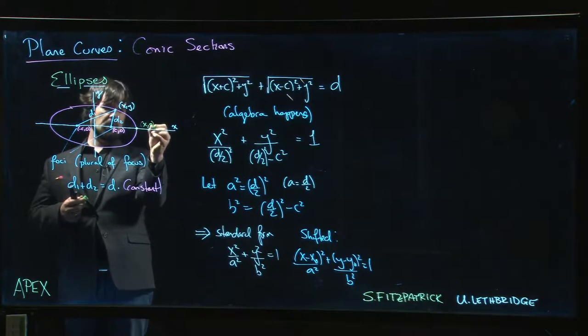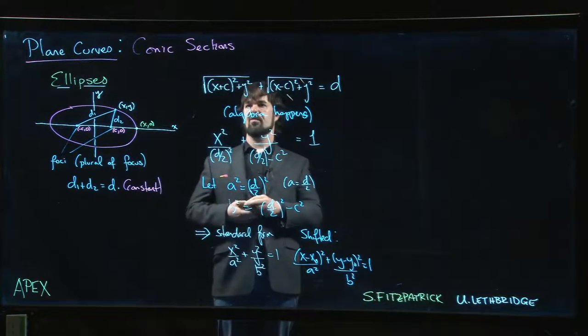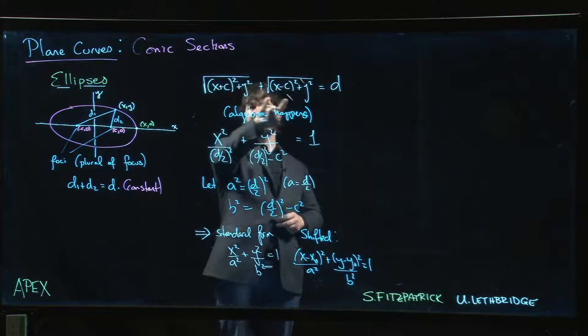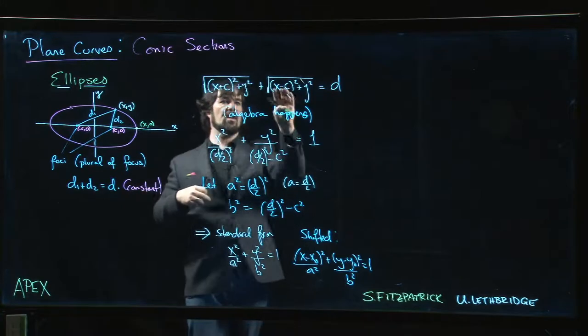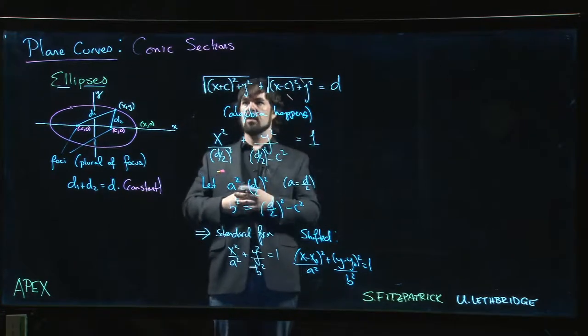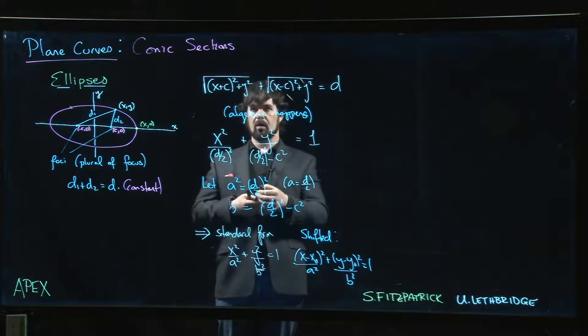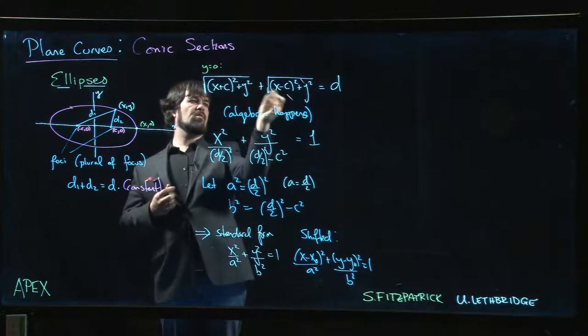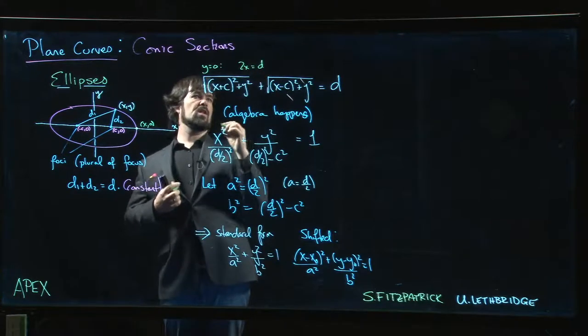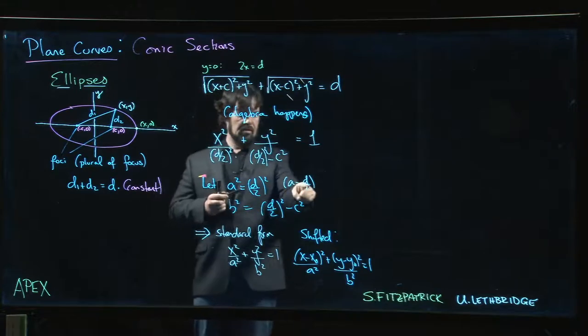So think about that point, (x, 0). So what happens if y is equal to 0? Well, we basically get the absolute value of x + c plus the absolute value of x - c. And if we put x over here, then this is just x + c, that's just x - c, that's equal to d. So we can combine that. If y is equal to 0, we just get x + c plus x - c, we get 2x is equal to d. So x is equal to d/2, x is equal to a.